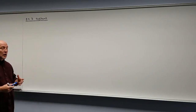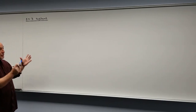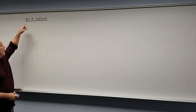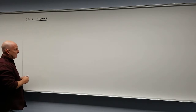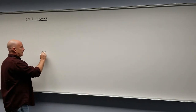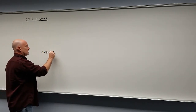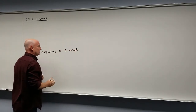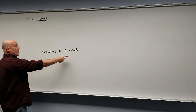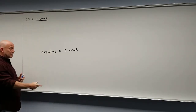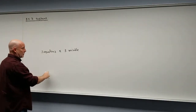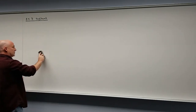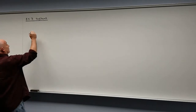3 by 3 systems are just bigger systems than what we've dealt with in the past. Remember our naming convention: 3 by 3 means we're going to have 3 equations by 3 variables. Up to this point we've only seen 2 equations and 2 variables. So how do we handle this when it gets more complicated? Let's take a look at an example of a 3 by 3 system.